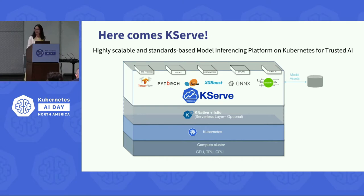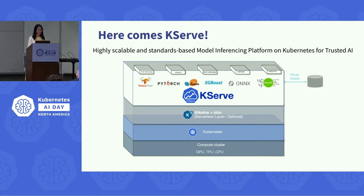So here comes K-SERV — a highly scalable and standards-based model inference platform on Kubernetes for trusted AI. At the lowest level is our compute resource: in a Kubernetes cluster, we have a collection of CPU, GPU, memory, and sometimes TPU. On top of all the computing resources, we run a Kubernetes layer used to orchestrate and manage all the compute resources.